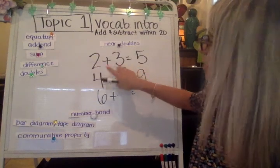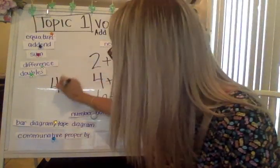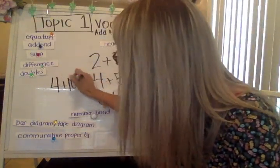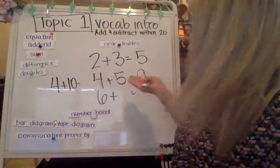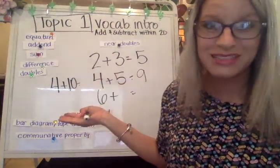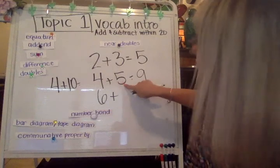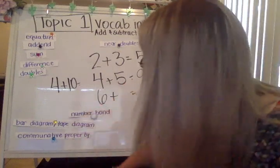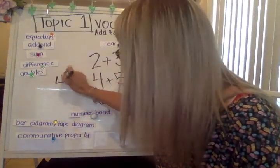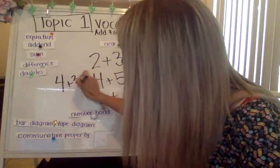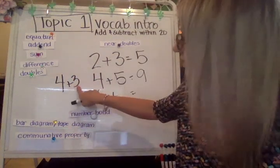Notice that near doubles are really close to a doubles fact. I wouldn't say that four plus ten is a near double because it's way bigger — it's way more than one apart. I could say that four plus three is a near double.